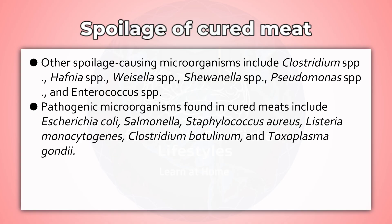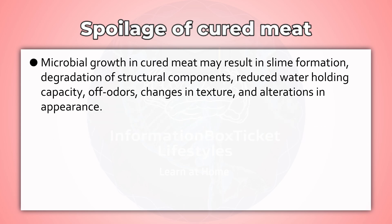Yeasts involved in cured meat spoilage include Candida, Debaryomyces, Torula, Torulopsis, and Trichosporon. Pathogenic microorganisms found in cured meats include Escherichia coli, Salmonella, Staphylococcus aureus, Listeria monocytogenes, Clostridium botulinum, and Toxoplasma gondii. Microbial growth in cured meat may result in slime formation, degradation of structural components, reduced water-holding capacity, off-odors, changes in texture, and alterations in appearance.